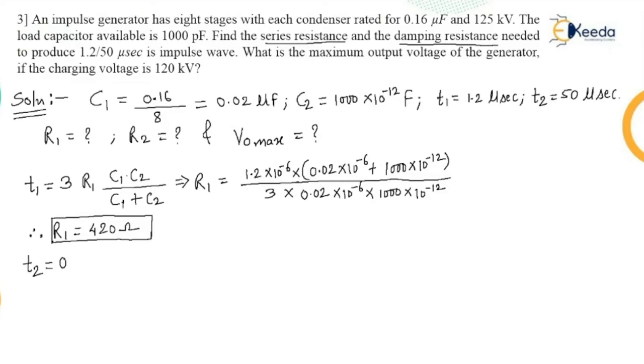Now the formula for T2 is 0.7 R1 plus R2 into C1 plus C2. From this formula I need the value of R2. So therefore R2 is equal to, now if I just check this T2 which is on the left hand side, I am writing on the right hand side. This 0.7 into C1 plus C2 goes in the denominator.